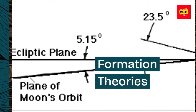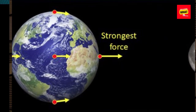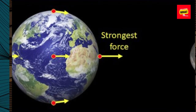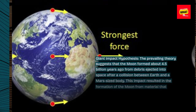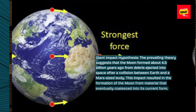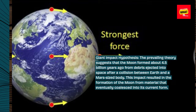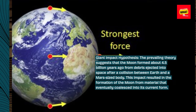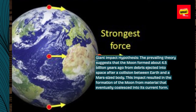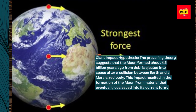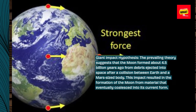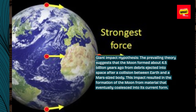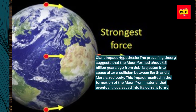Giant Impact Hypothesis: The prevailing theory suggests that the Moon formed about 4.5 billion years ago from debris ejected into space after a collision between Earth and a Mars-sized body. This impact resulted in the formation of the Moon from material that eventually coalesced into its current form.